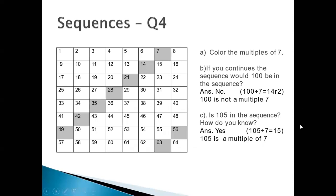The slide is showing us: color multiples of 7. Start counting: 1, 2, 3, 4, 5, 6 — 7 is the number which should be shaded because 7 is a multiple of 7. Then skip 8, 9, 10, 11, 12, 13 — 14 is the number which is the multiple of 7.